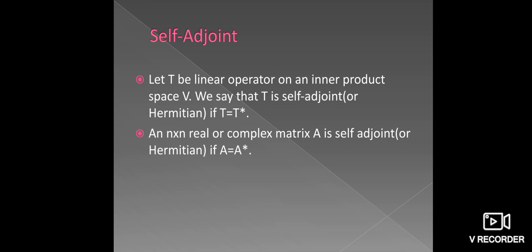Now see self-adjoint or hermitian. If T is a linear operator on an inner product space V, then we say that T is self-adjoint or hermitian. The condition is T = T*.